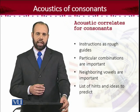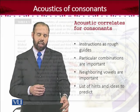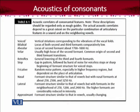Let me take you to the table where the acoustic correlates for consonants are given. We are talking about the voiced quality: if there is a voiced consonant, there would be vertical striation corresponding to the vibration of vocal folds. So the voicing line on the spectrogram would give you the hint that the sound is voiced. For the bilabial feature, the locus of both the second and third formants (F2 and F3) would be comparatively low.